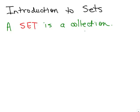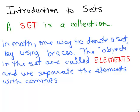Now, the notation we use for set is by using braces. In math, one way to denote a set is by using braces. The objects in the set are called elements and we separate the elements with commas.